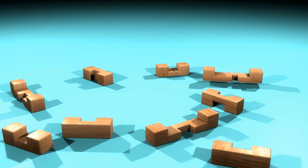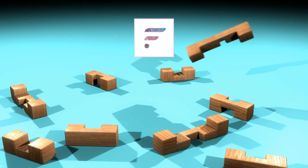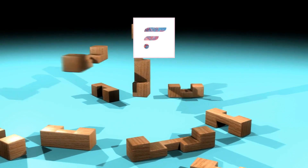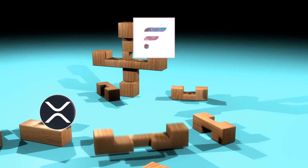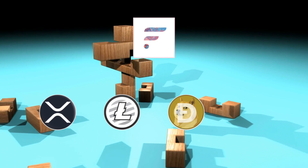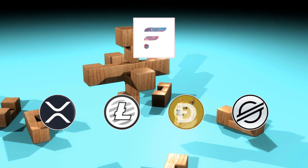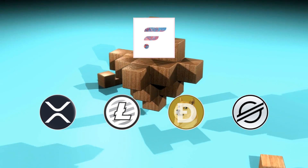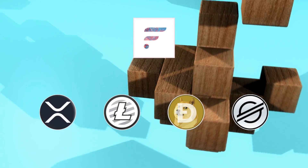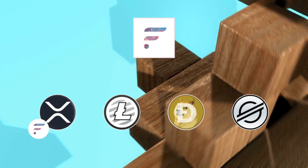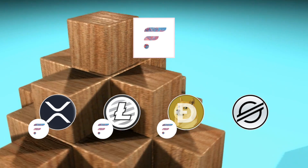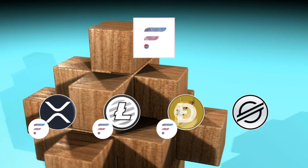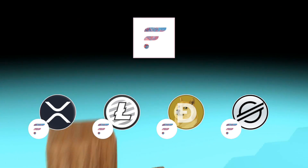The four assets which are currently integrated with the Flir network are XRP, Litecoin, Dogecoin, and XLM. When minted on the Flir network, these become FXRP, F Litecoin, F Dogecoin, and F XLM respectively.